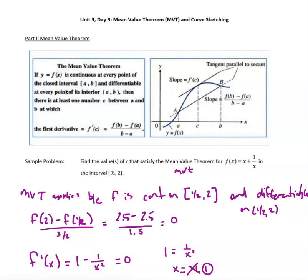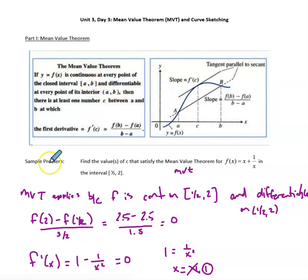One last comment on the MVT: this is what we call an existence theorem. As long as we meet the two hypotheses — continuous on the closed interval and differentiable on the open interval — the MVT guarantees the existence of an x value on the interval where the derivative equals the average rate of change.